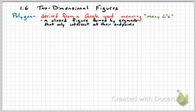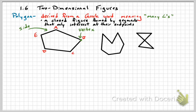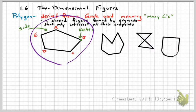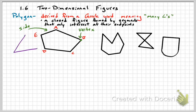Polygons cannot crisscross, cannot have rounded edges, and cannot have any openings — they must be enclosed figures. Just like angles, polygons are made up of vertices and sides, but instead of having an opening like an angle, the sides connect. Every spot where two sides meet is a vertex.